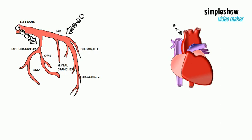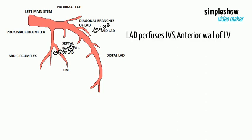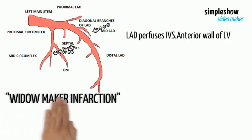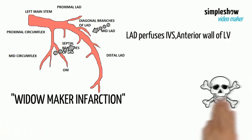The branches of the LAD are septal and diagonal branches. The left anterior descending artery perfuses the interventricular septum and anterior wall of the left ventricle. Blockage of this artery is often called the widowmaker infarction due to high death risk.